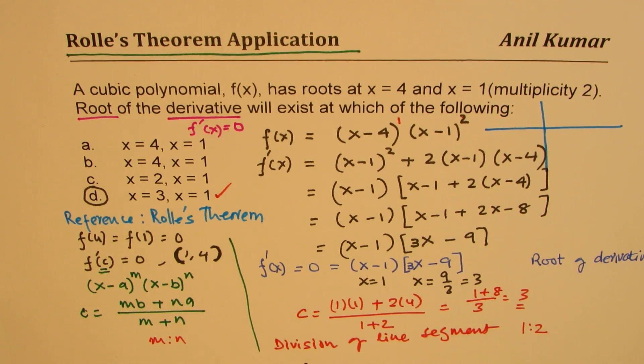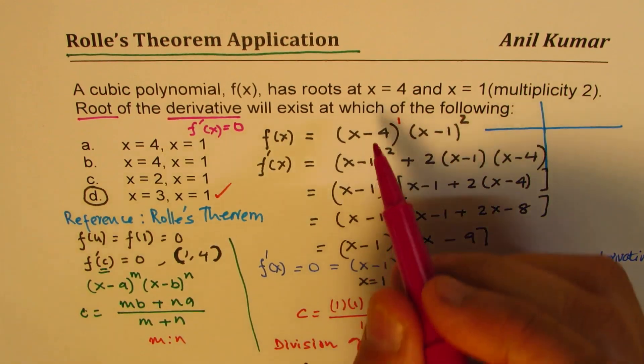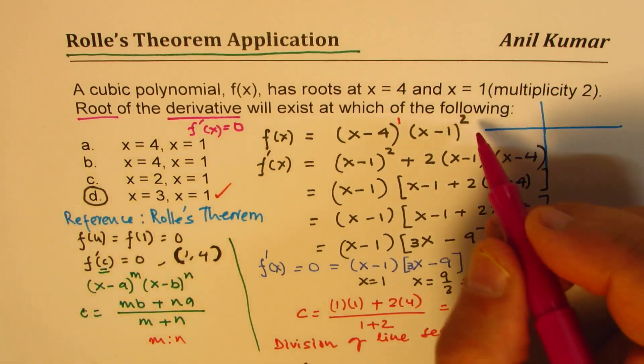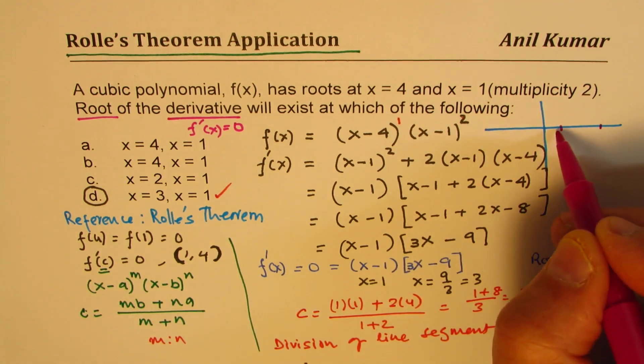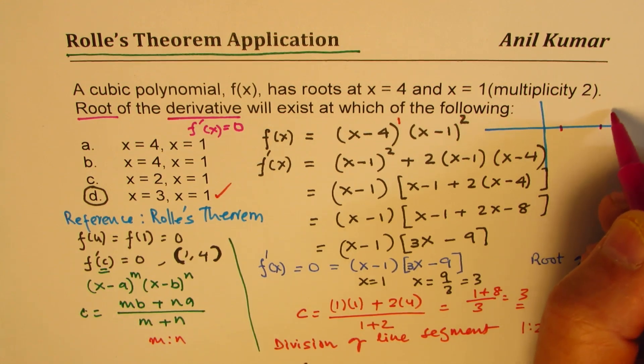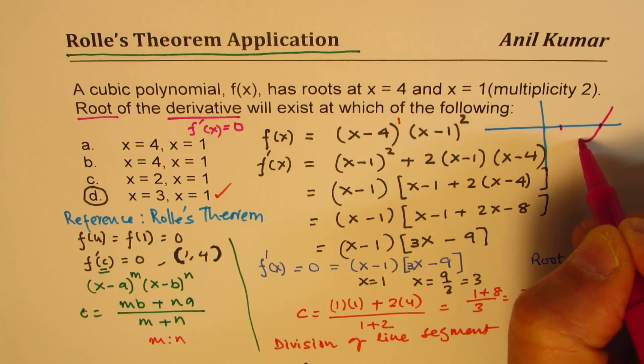We'll assume this is positive coefficient, right? So we have 0 at 1, 0 at 4. This is the turning point. So the parabola comes from this, I mean, the cubic function will be kind of like this.